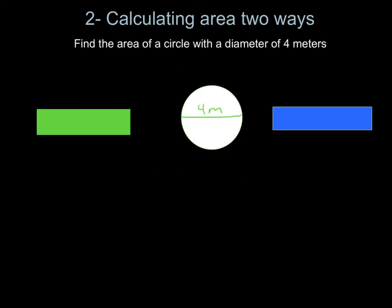So we are going to calculate the area two different ways. We're going to use this one example, and we're going to use the two different types of pi. But before we get to calculating, we want to remember what the question is asking. Find the area of a circle with a diameter of four meters. So here is our picture, four meters, which means from one side through the center of the circle to the opposite side is four meters.